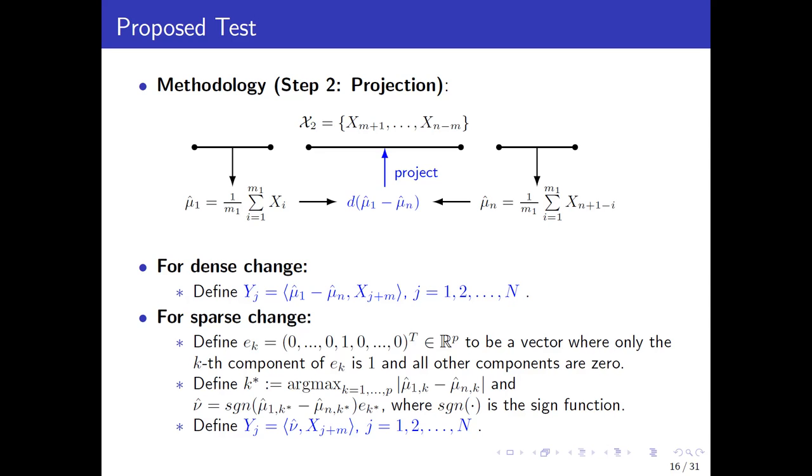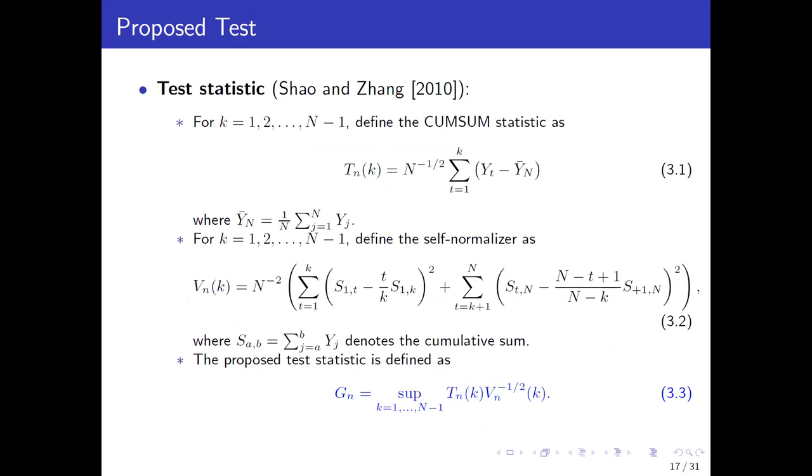After obtaining this sequence of scalars, which is one-dimensional data, we can directly follow the procedures proposed by Shao and Zhang 2010 to define a CUSUM statistic TNK and a self-normalizer VNK. With these two auxiliary statistics, we are ready to compute our test statistic, which is denoted by GN as shown in equation 3.3.